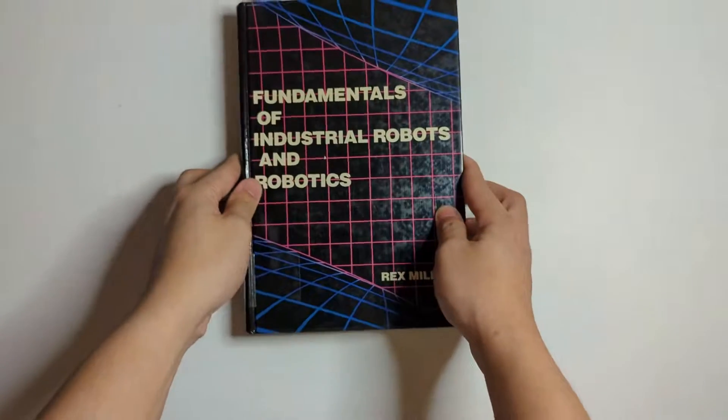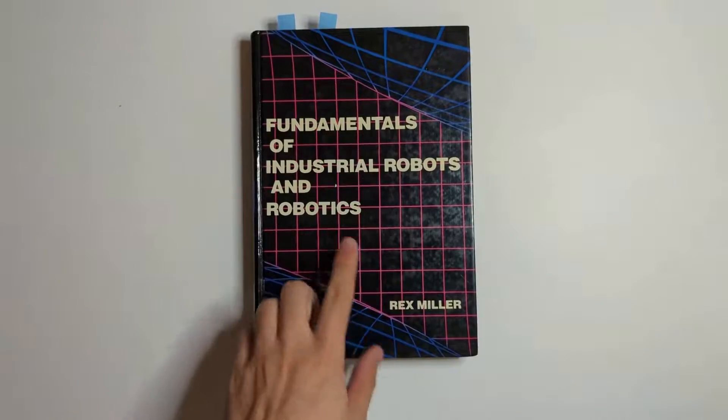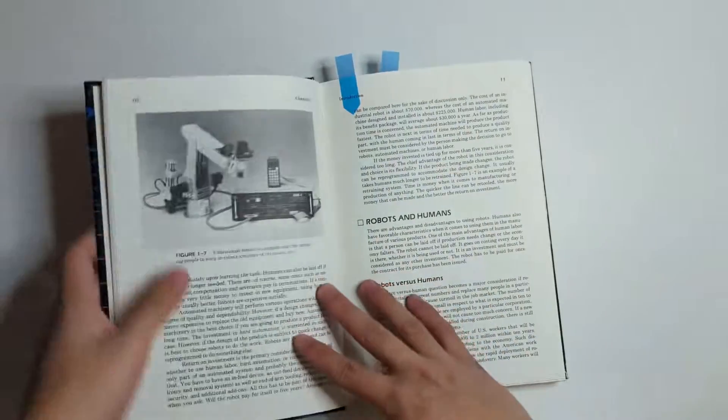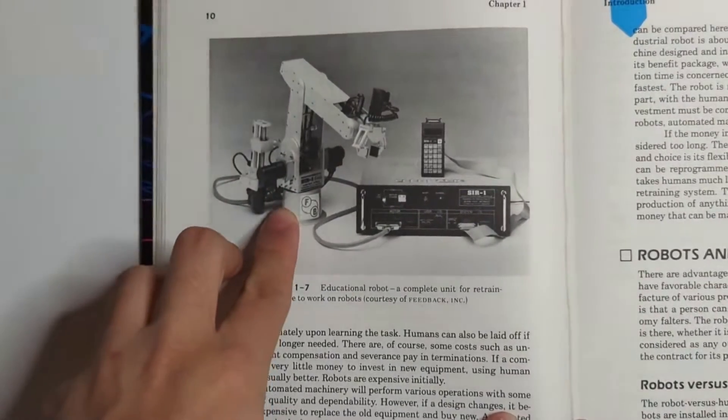So most recently I've been reading this book on the fundamentals of industrial robots and robotics by Rex Miller. This goes very in-depth into the design process of what's called a robot arm.